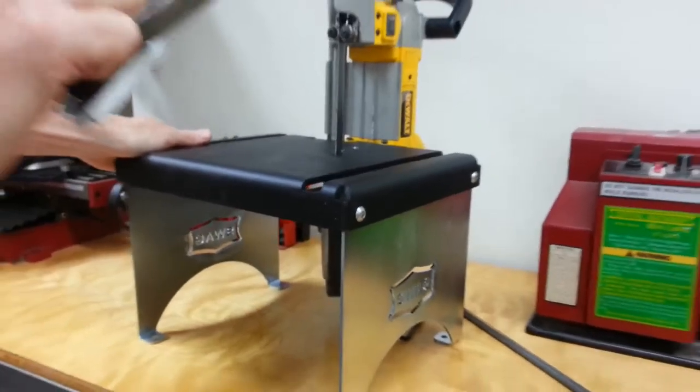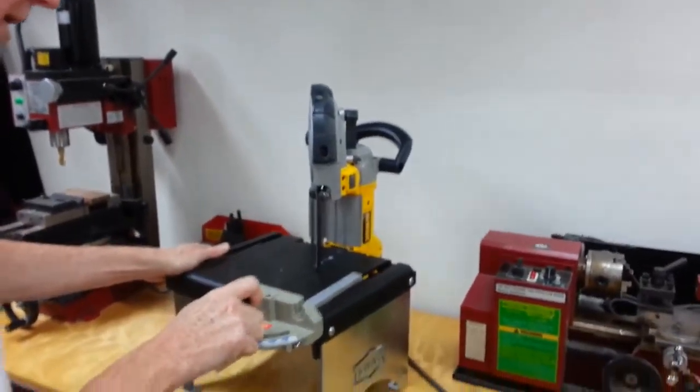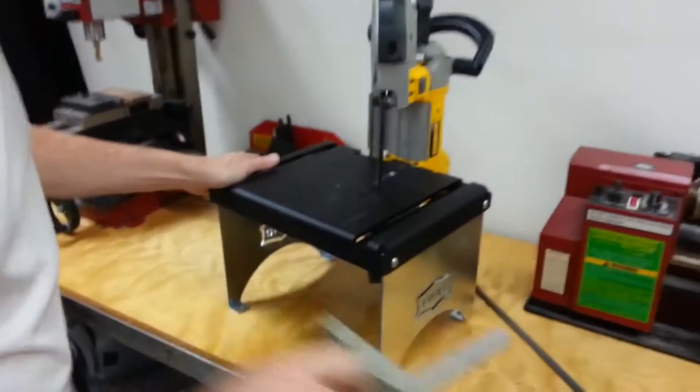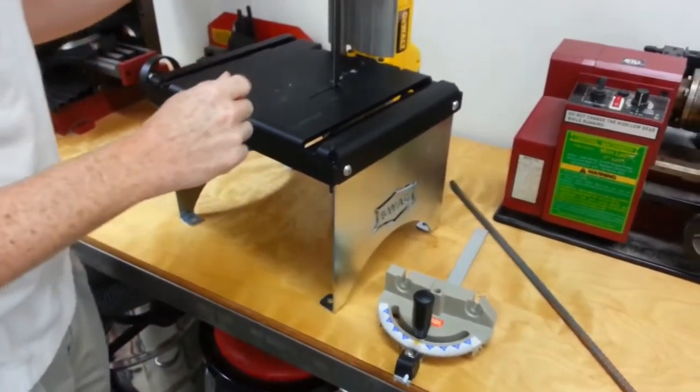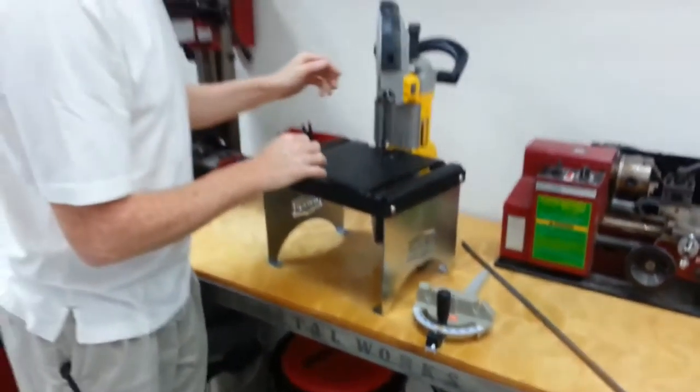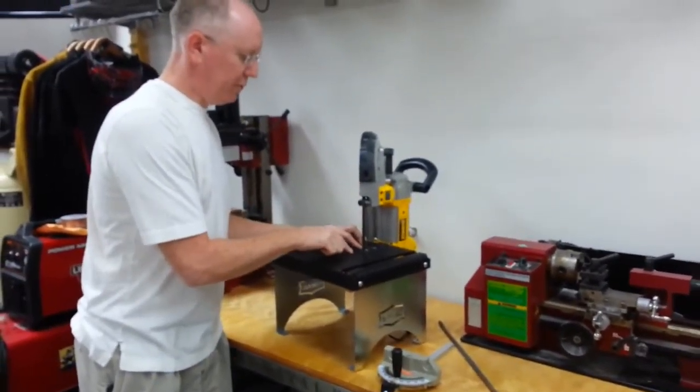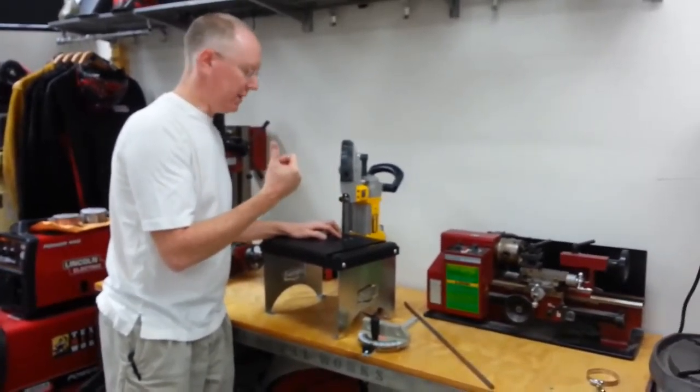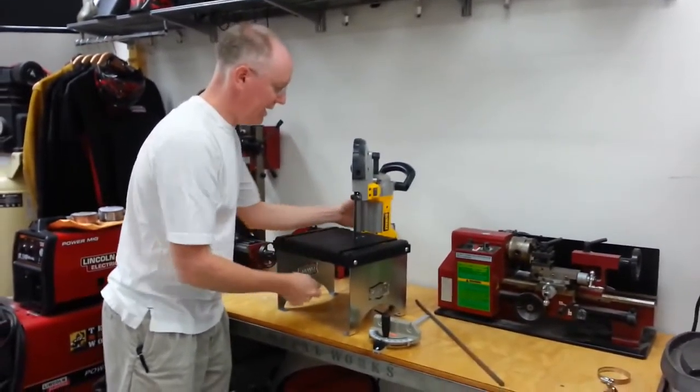And this is optional. You can get one of these little Ryobi sliding miters. And the way it works is the normal little plate that's on the band saw, you take it off and you put this plate on.